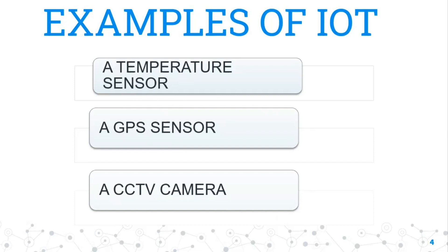For example, suppose I am sitting in Janakpur right now and I want to know the temperature of Kathmandu — I can easily know it because of a temperature sensor, and this is happening because of IoT. It is transmitting the temperature of that place and it is coming to my device.